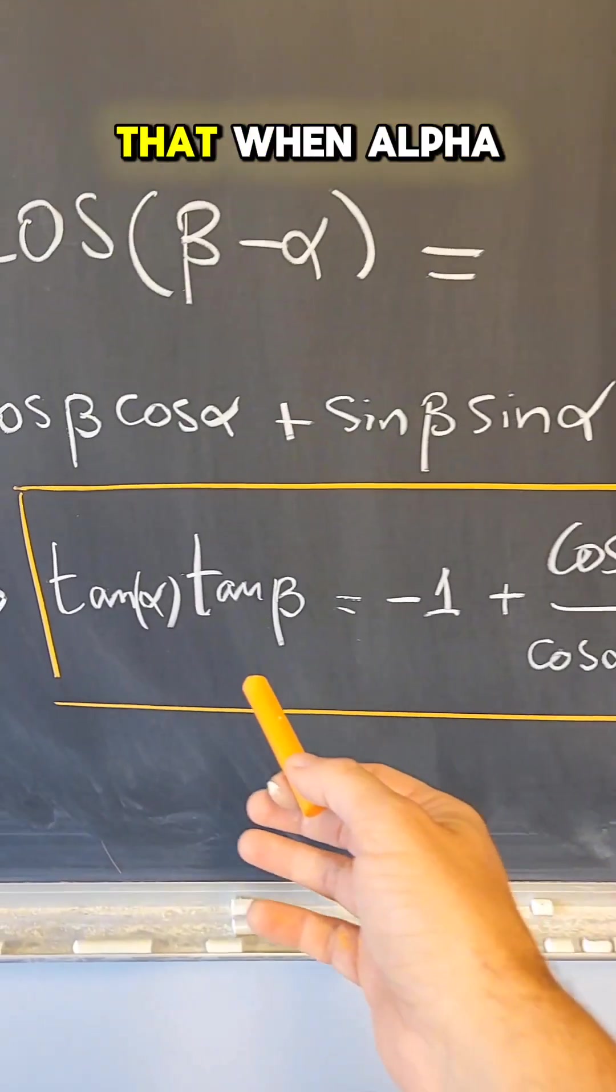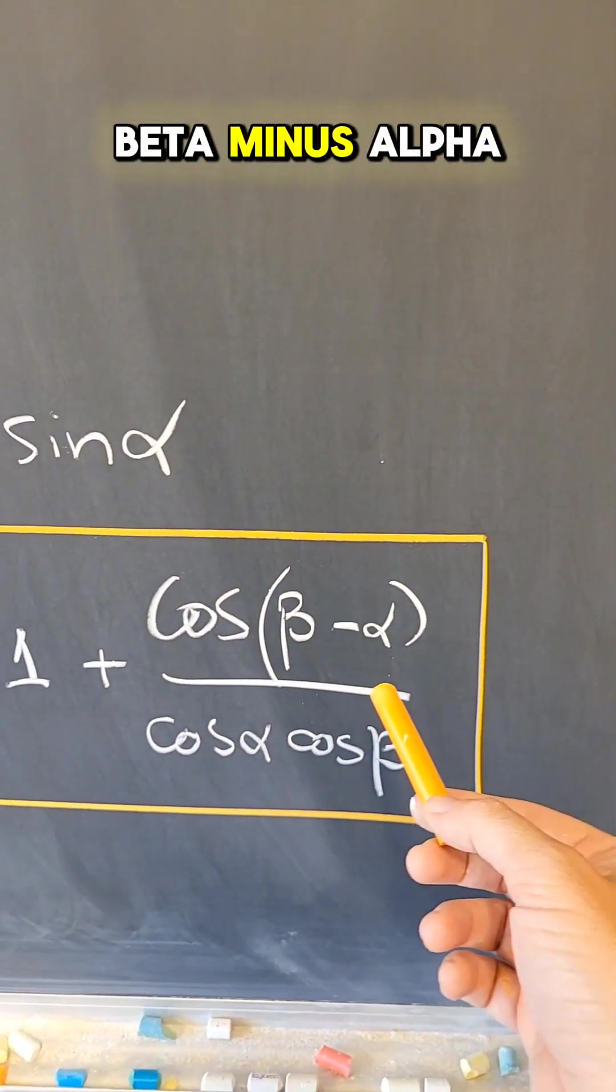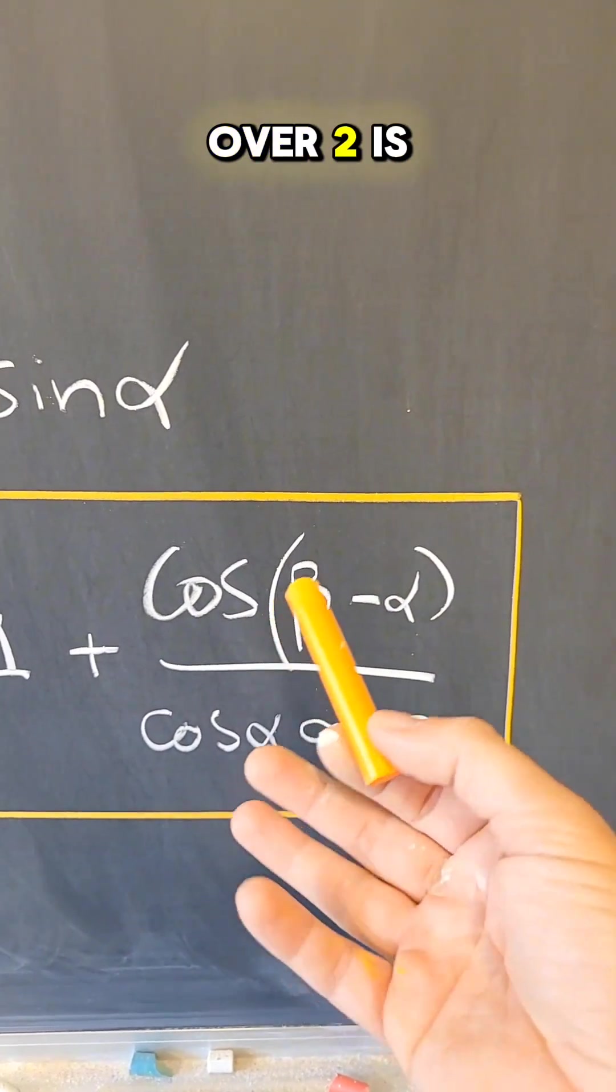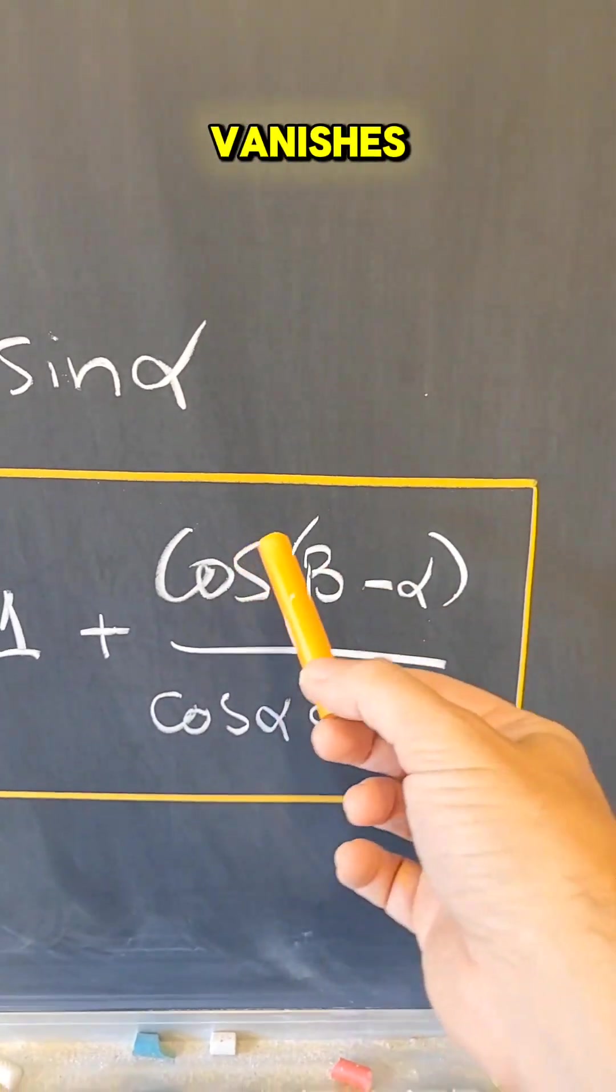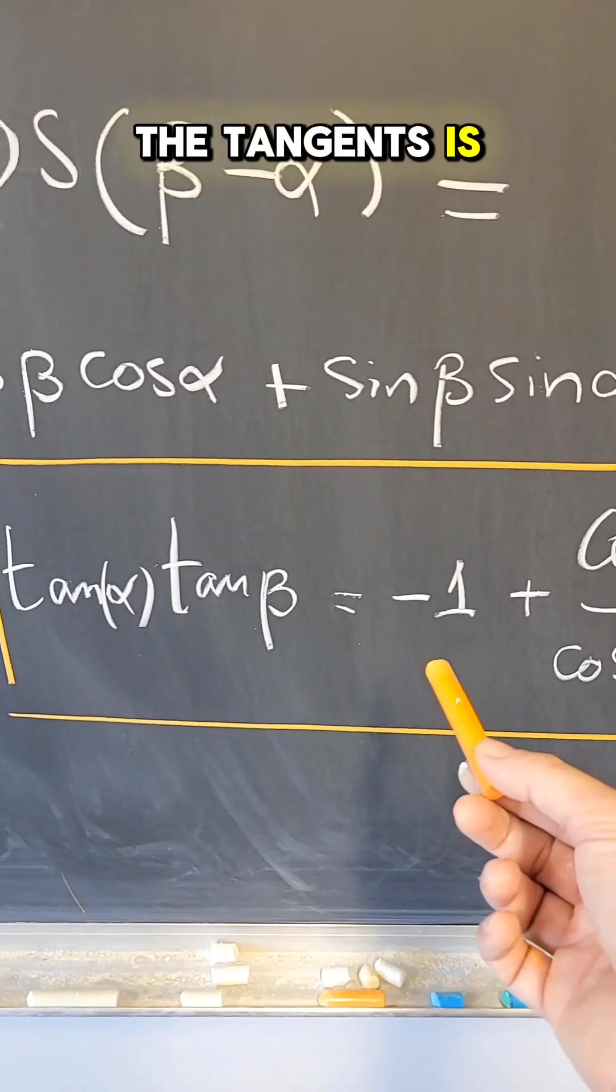And now notice that when alpha and beta are perpendicular, that means that beta minus alpha differ by pi over two. And therefore the cosine of pi over two is zero. This whole term vanishes. And that's why you get that the product of the tangents is minus one.